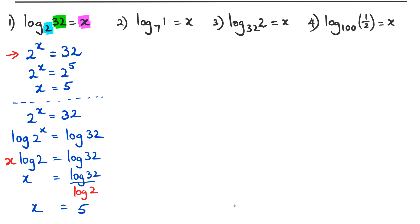You're probably wondering: couldn't I have just done that right at the beginning? In fact you can. So to recap: method one uses the fact that the numbers work out nicely; method two is a little longer but still uses the calculator at the end; and method three is just the calculator directly.